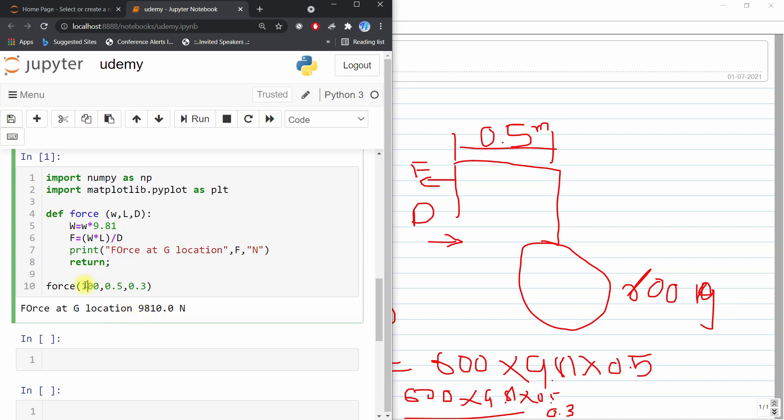So here you can see that I will change this value to 100 and it will give me force at G location. Now I will change my np.linspace.